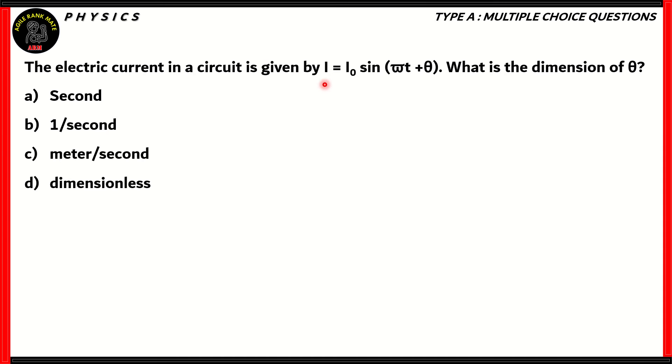This one's from physics. The electric current in a circuit is given by I equals I naught sine omega t plus theta. What's the dimension of theta?